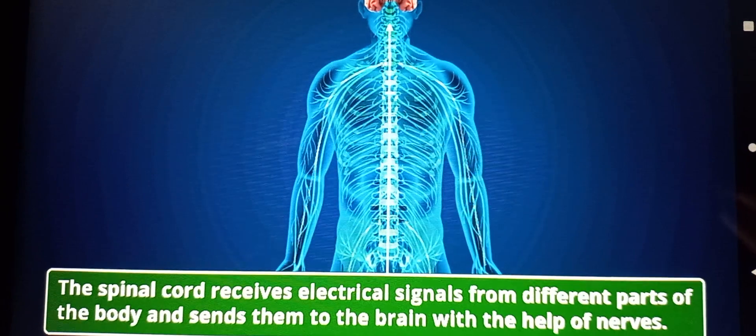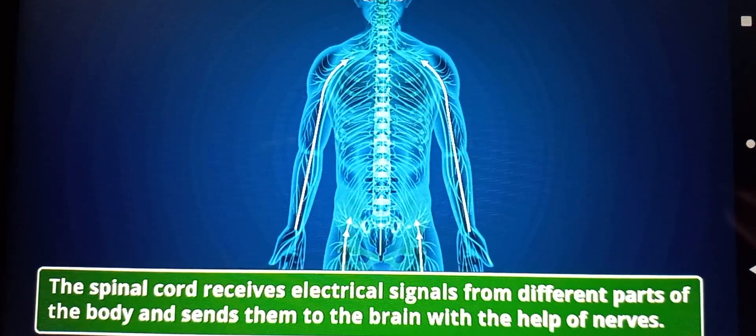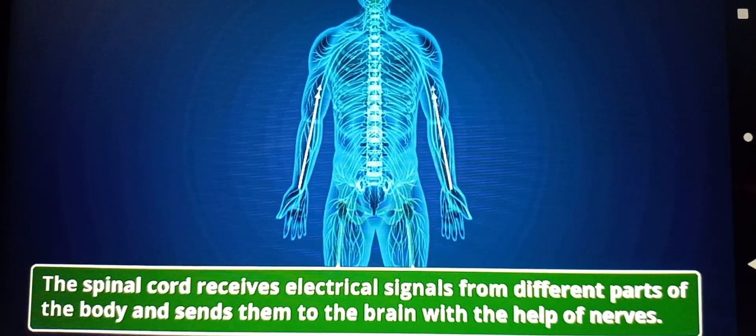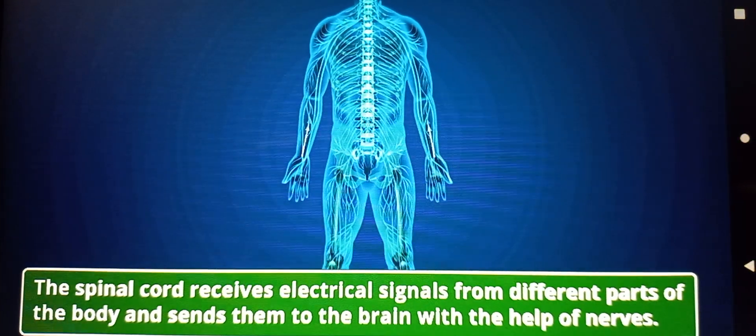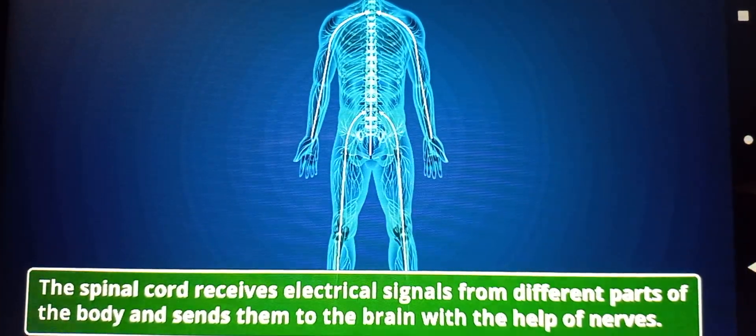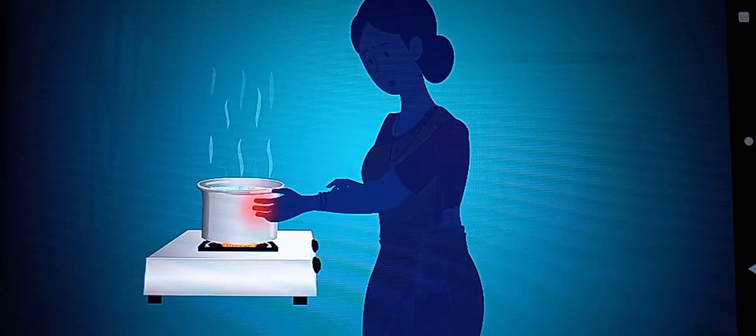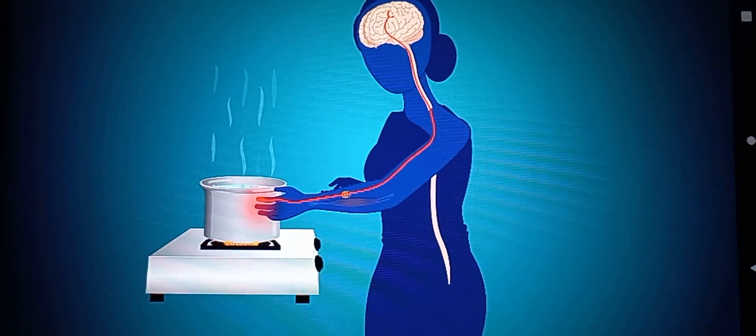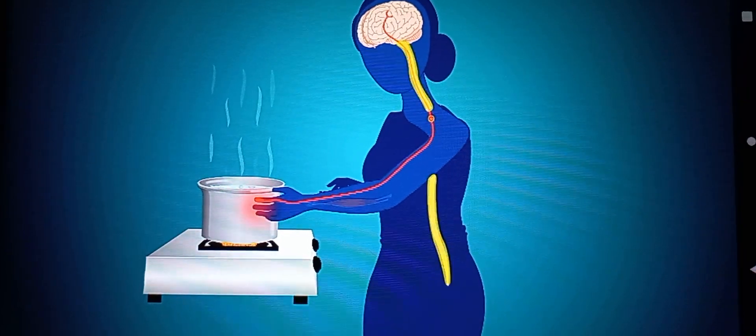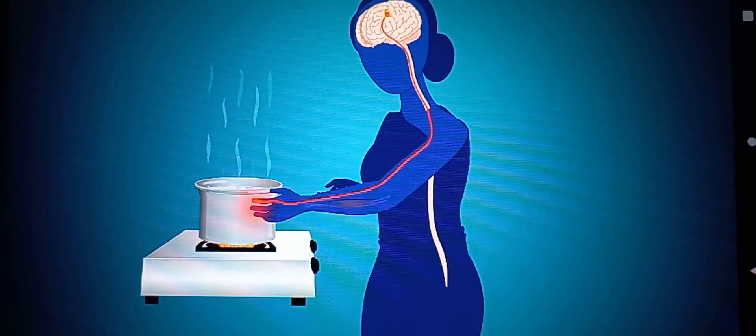It receives electrical signals from different parts of the body and sends them to the brain with the help of nerves. For example, when we touch a hot surface with our hand, the signal from our hand is transmitted to the brain through the spinal cord with the help of nerves.